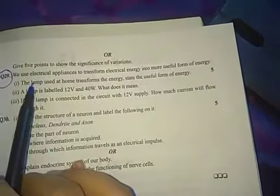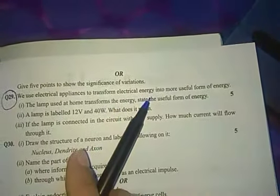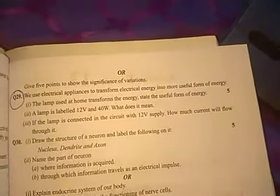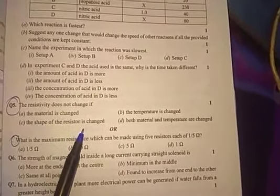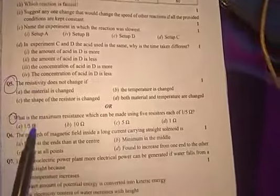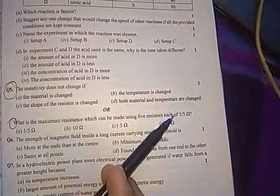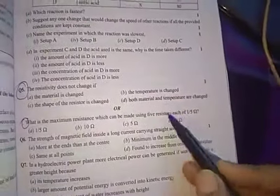Then, we use electrical appliances to transform electrical energy into more useful form of energy. This is the question, five mark question again. Then one mark question: The resistivity does not change if the material is changed, if the shape of the resistor is changed, temperature is changed, both material and temperature are changed. Then what is the maximum resistance that can be obtained using five resistances each of one by five ohm? Apply using formula Rs series and parallel.